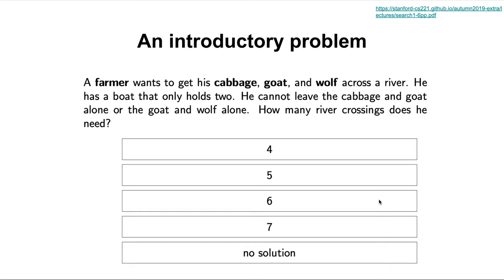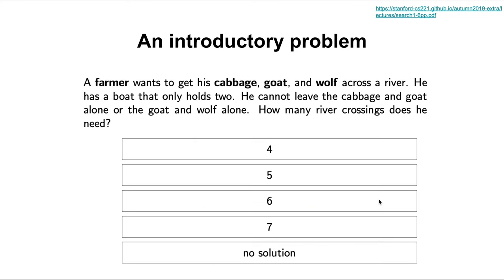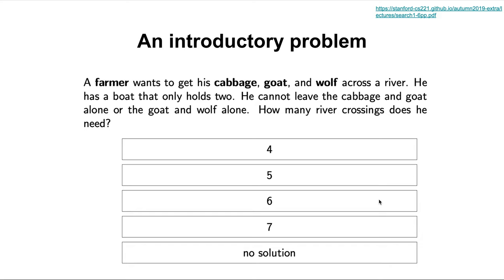Think about how you would have solved this problem — you're trying to satisfy constraints and achieve an end goal. When you analyzed this problem, you probably analyzed scenarios in your head. This is an iterative process where you try different possibilities: let's try the wolf going across first, let's try the cabbage going across first. You didn't necessarily think of the logic immediately — you were just trying different ways to see which one works. That's an example of brute force trial and error, where you commit to an action and observe the consequences.